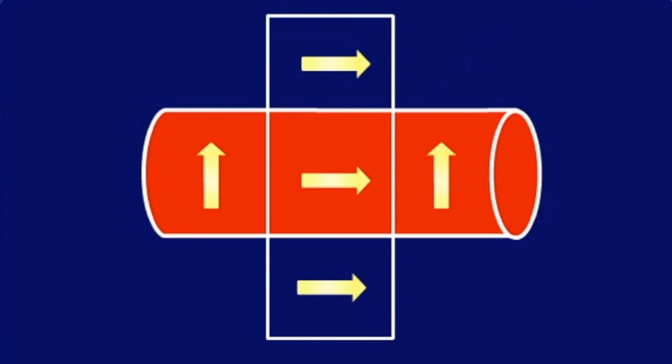If we wait some more time before we send in a second 90-degree pulse, protons will have undergone some relaxation. And there is some longitudinal magnetization again, as shown by the arrows pointing back up.